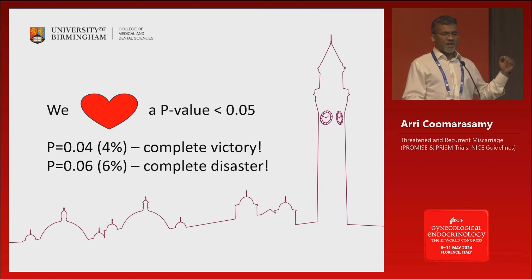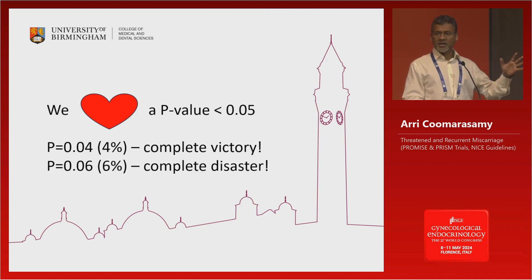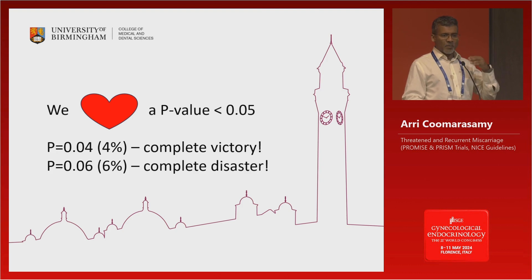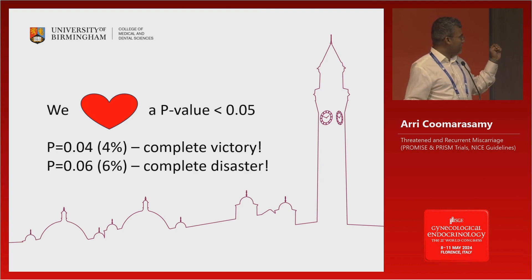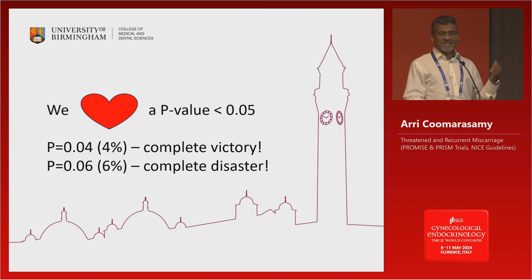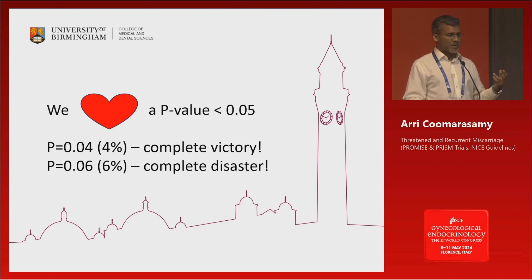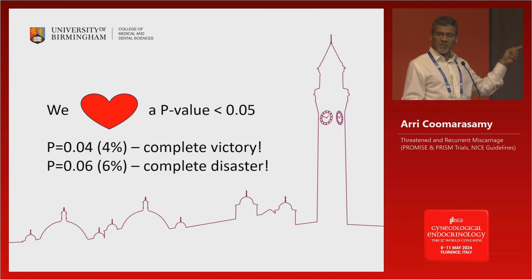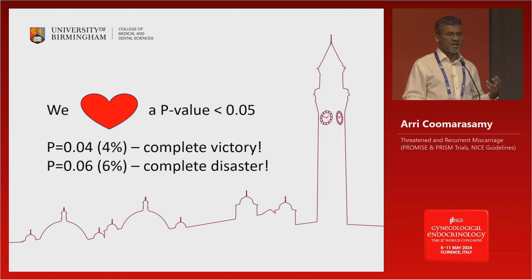If you have a p-value of 0.05, you can declare complete victory — the treatment is effective, you can rest the case, and the world moves on with that treatment. But if you have a p-value of 0.06, that is catastrophe, that is complete disaster. It means it is non-significant, it means the treatment doesn't work. But look at it — there is only a two percentage point difference between the two. Why is the interpretation so different? Is there something that is not right here?